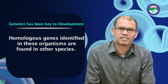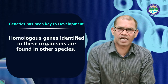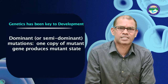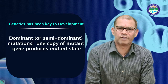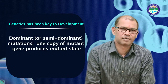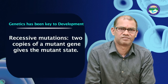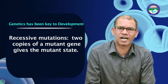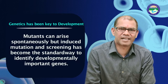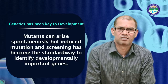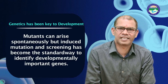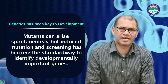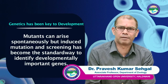Homologous genes identified in one organism are found in other species as well. Dominant mutation: one copy of the mutant gene produces the mutant phenotype. Recessive mutation: two copies of the mutant gene are required to give the mutant status. Mutant phenotypes can arise spontaneously, but induced mutation and gene suppression has become the standard way to identify developmentally important genes.